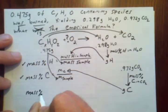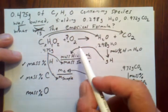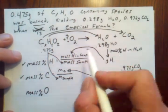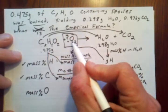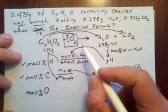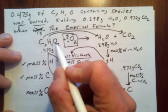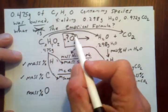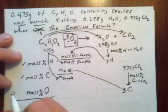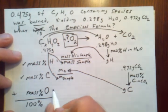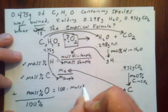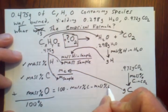Mass percent oxygen is slightly trickier because even though we can figure out how much oxygen is in our water product and carbon dioxide product, the problem is we have no idea how much oxygen came from the air during combustion. Some of the oxygen in the water and carbon dioxide comes from the original reactant, not just from the air. So we can't figure out the mass percent of oxygen in our reactant by the same method. But since we know the mass percent of hydrogen and carbon, and all three add up to 100%, the mass percent of oxygen equals 100 minus mass percent carbon minus mass percent hydrogen.